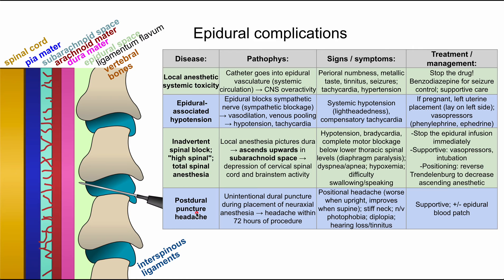Next is post-dural puncture headache. The pathophysiology is unintentional dural puncture during placement of neuraxial anesthesia. The headache usually develops within 72 hours of the procedure. It is positional — worse when sitting upright and better when lying supine. The patient may also have a stiff neck, nausea and vomiting, photophobia, diplopia, and even hearing loss and tinnitus.